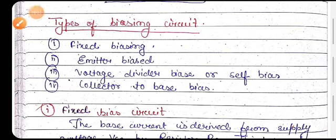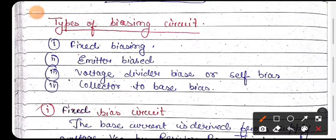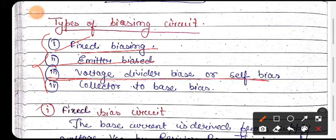Good afternoon dear students. Today's topic is types of biasing circuits. There are four types: first, fixed bias circuit; second, emitter bias circuit; third, voltage divider or self bias circuit; and fourth, collector to base bias circuit.